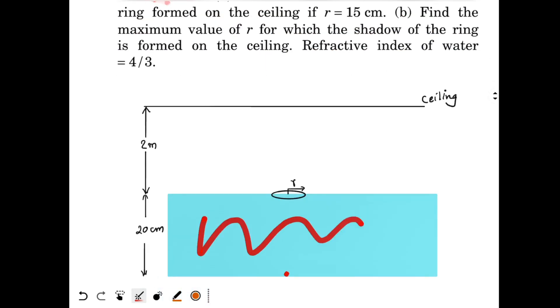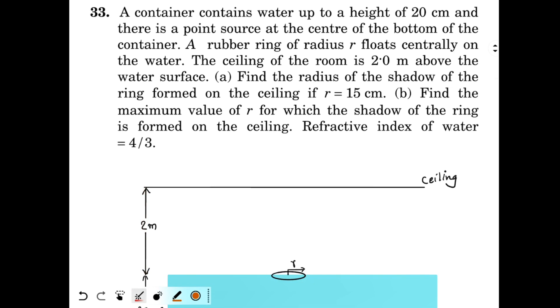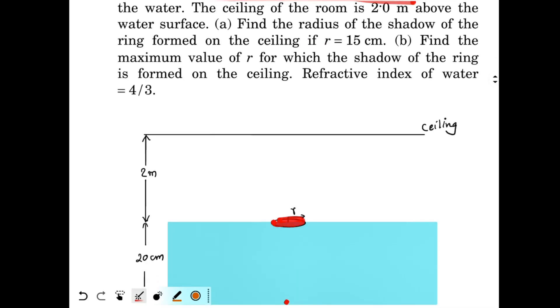So here we have a water container. Height of water level is 20 cm. The ceiling of the room is 2 meters above the water surface. A rubber ring of radius r is floating, so there is a rubber ring over here. And there is a point source of light at the bottom of the container.